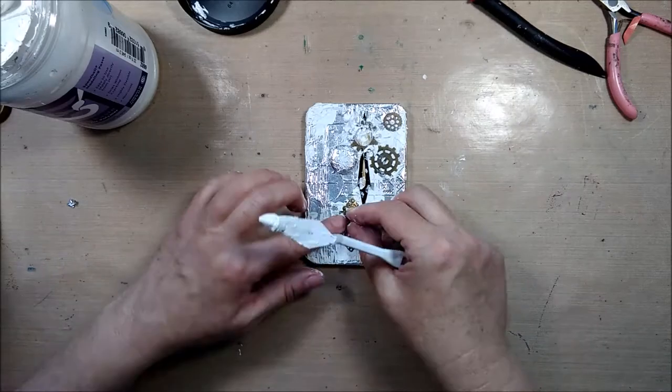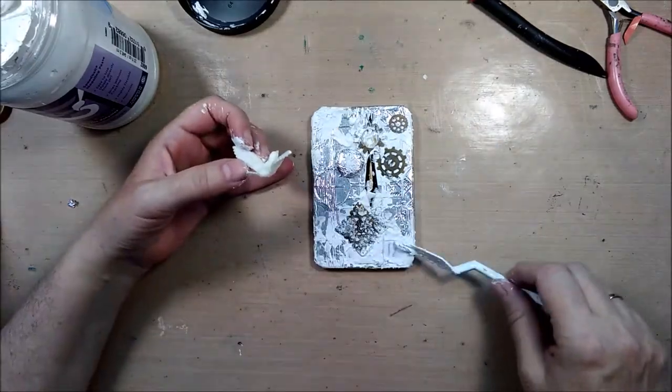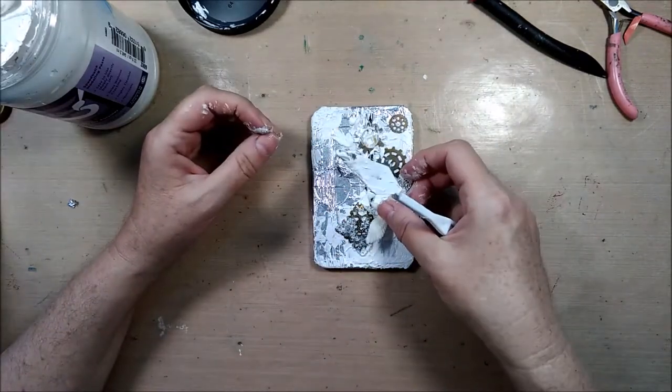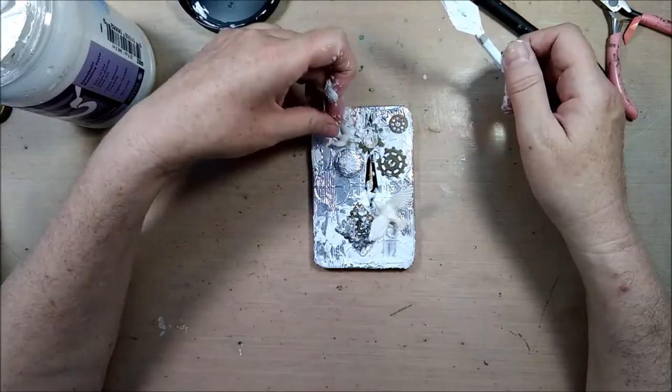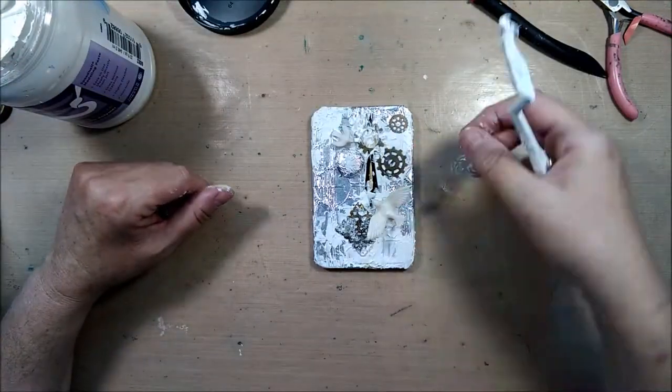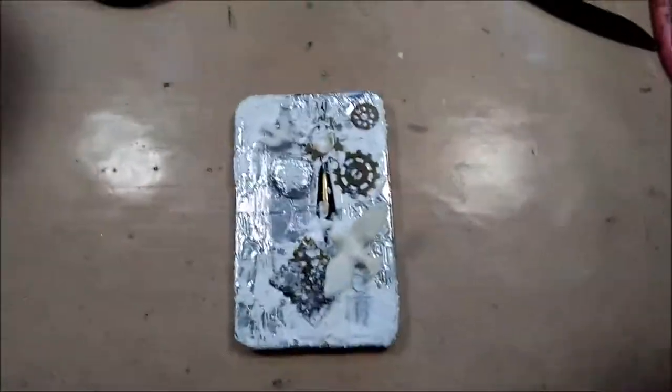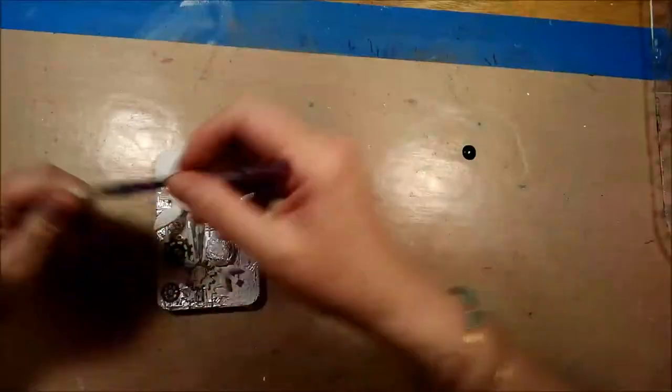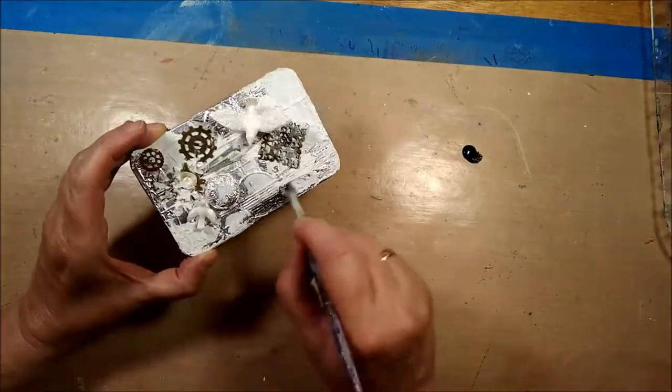And here is a metal filigree embellishment piece, and then I thought about these two little white birds I had for a while, and so I added those as well. Now everything is dry, thoroughly dry, and I can start with some paint.